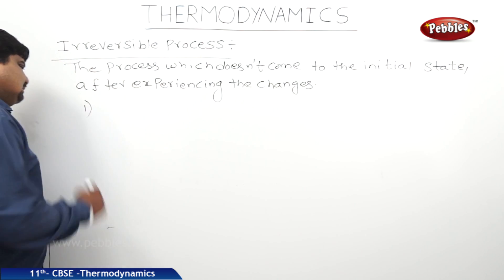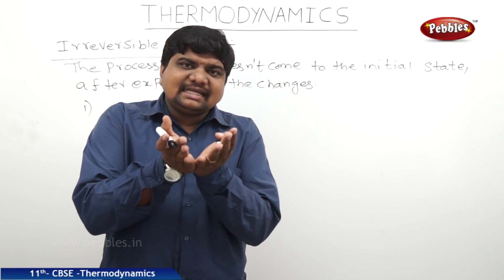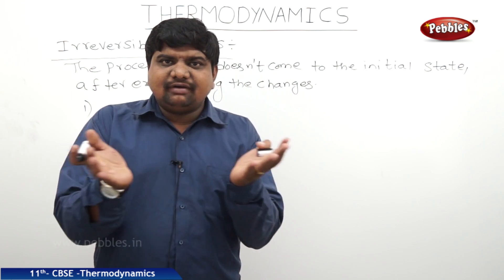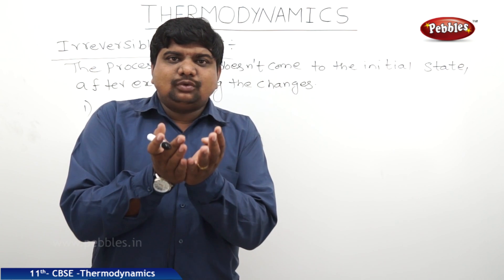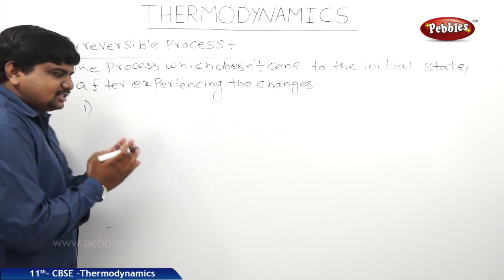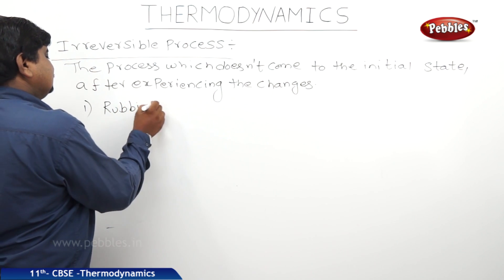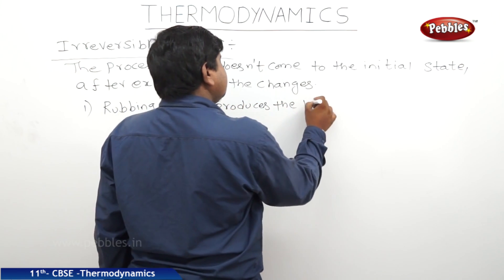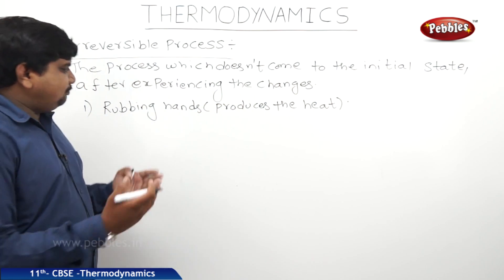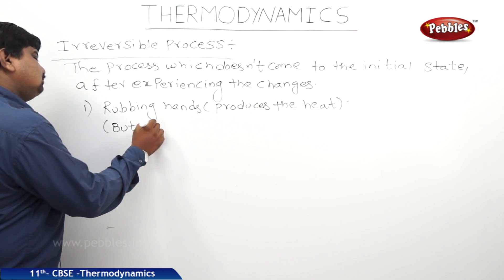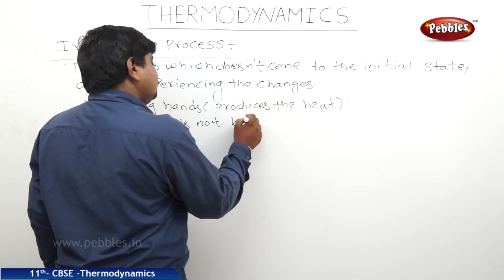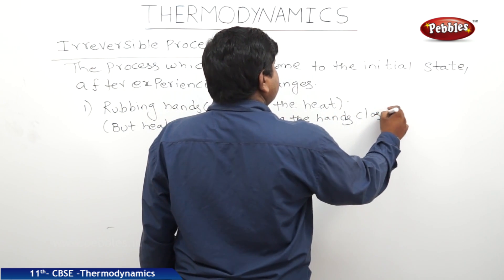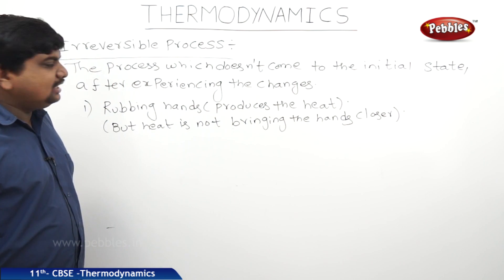What are the examples? When we rub our hands to produce heat, the two hands move against each other to overcome friction, and because of this friction heat is produced. But we are not moving our hands to produce the heat in reverse — heat does not bring the hands closer. This is one of the examples of an irreversible process — rubbing hands produces heat, but heat cannot reverse the motion of the hands.